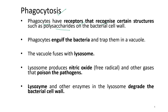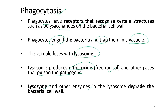The phagocyte engulfs the bacteria and traps them inside. The phagocyte then fuses with the lysosome, which produces nitric oxide — a free radical — and other gases that poison the pathogen. The lysosome and other enzymes within it then degrade the bacterial cell wall.